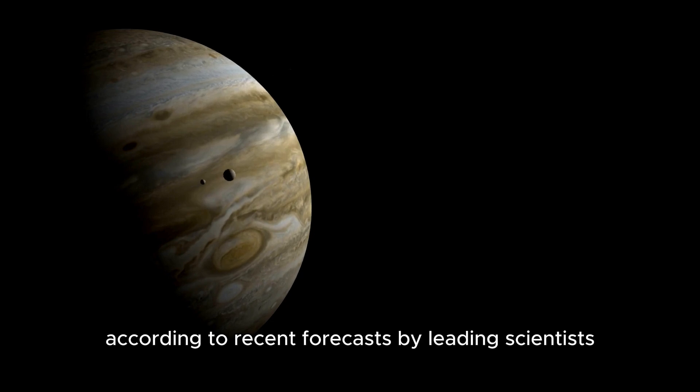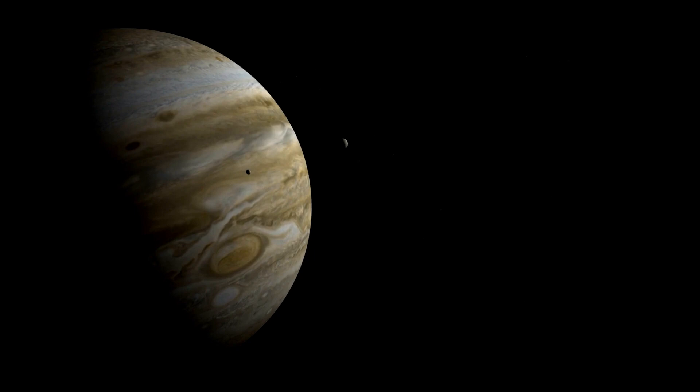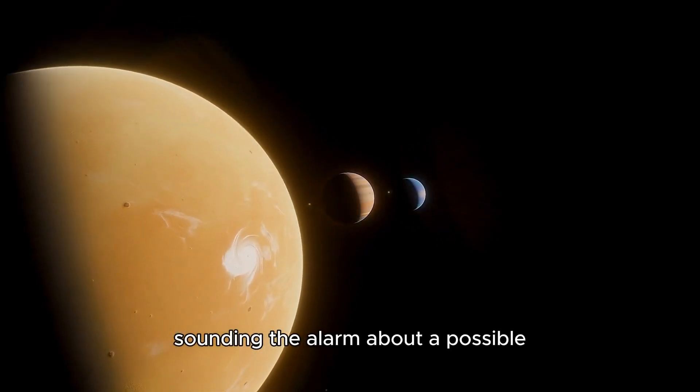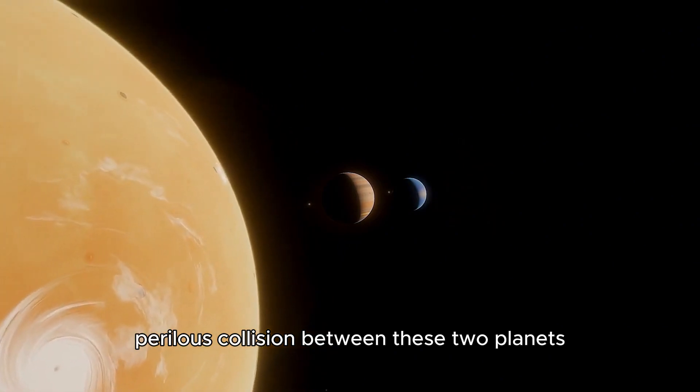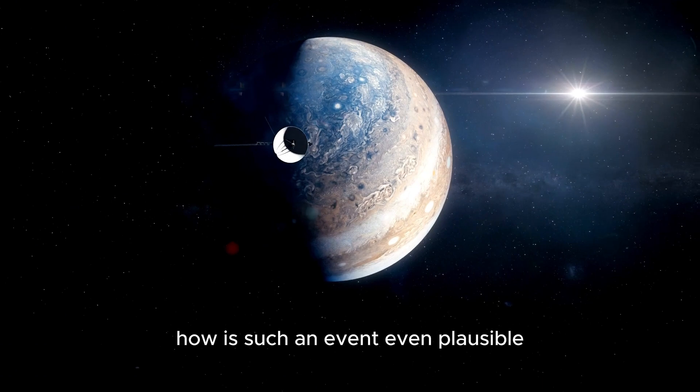According to recent forecasts by leading scientists, Pluto's trajectory is dangerously close to Neptune's, with both Neil deGrasse Tyson and Michio Kaku sounding the alarm about a possible perilous collision between these two planets that could present a significant threat to Earth. How is such an event even plausible?